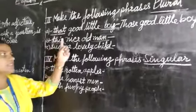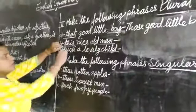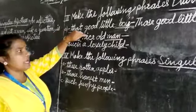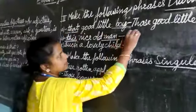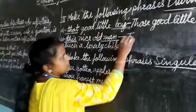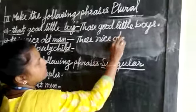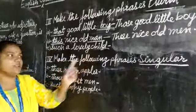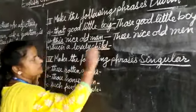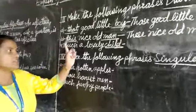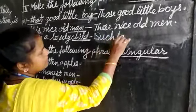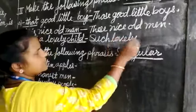Next: 'This nice old man.' The plural of this is these, and the plural of man is men. So our answer will be: these nice old men. Next: 'Such a lovely child.' The plural of child is children. So our answer will be: such lovely children.